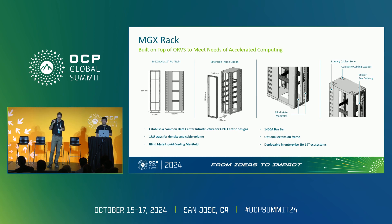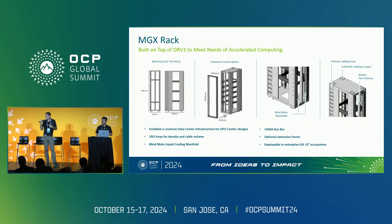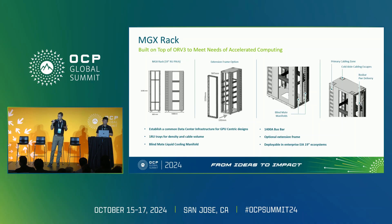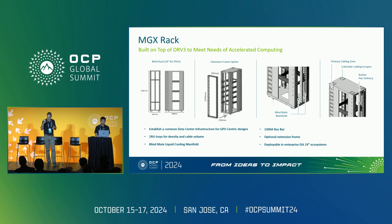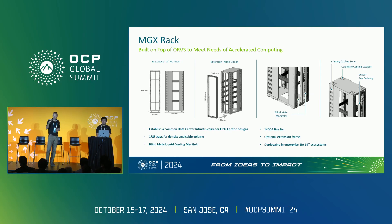In the back of the rack, we have a deeper bus bar — maintaining the width but increasing depth to increase ampacity, up to 1400 amps capable. We're also providing an optional extension frame that extends the rack footprint to 1200 millimeters, enclosing all the hardware in the back to protect it. Importantly, this rack can be deployed within existing traditional 19-inch data centers today. If you have a hot aisle cabling implementation in a traditional EIA data center, you can simply remove the bus bar and have an EIA rack ready to go.